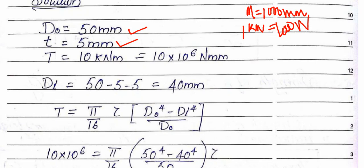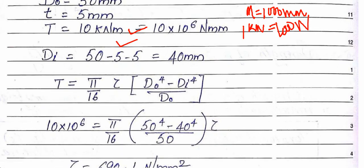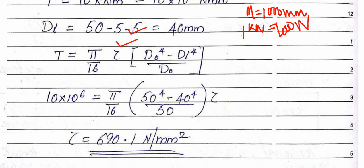The calculated shear stress value is 690.1 newton per millimeter squared. The answer is 690.1 N/mm².